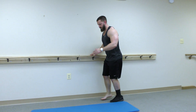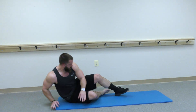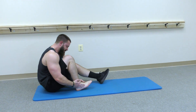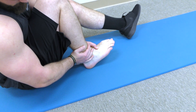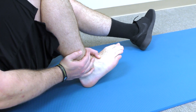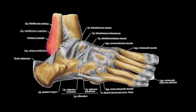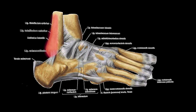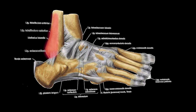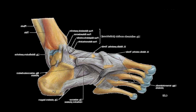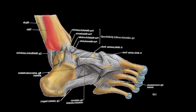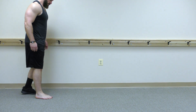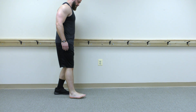The Ottawa Ankle Rules are a good way to make a clinical decision to help determine the need for diagnostic imaging for ankle and/or foot trauma. An ankle x-ray is only required if there is any pain in the malleolar zone and bone tenderness at the posterior edge or tip of the lateral malleolus, or bone tenderness at the posterior edge or tip of the medial malleolus, or inability to bear weight both immediately and in the emergency department for four steps.